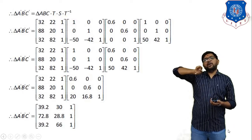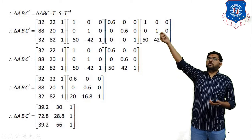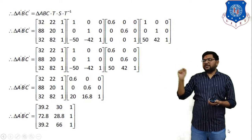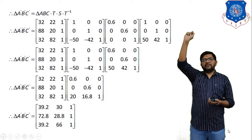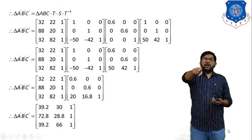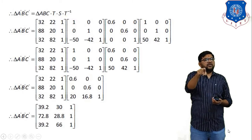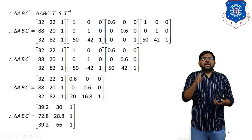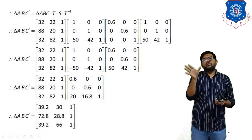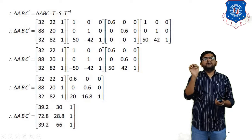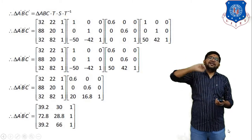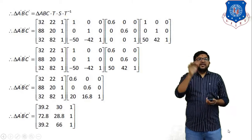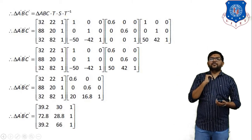After scaling, we have to shift the point back to its actual position — moving 50 units in the X axis and 42 units in the Y axis. So the inverse translation matrix T-inverse is: [1 0 0 / 0 1 0 / 50 42 1]. This completes the setup of the three-matrix expression for the example.